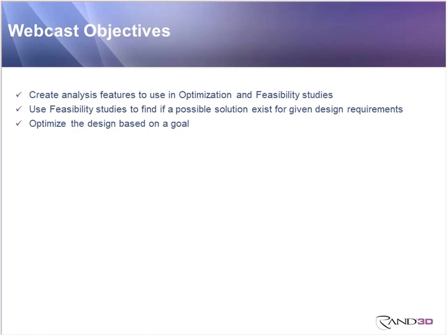The feasibility study is basically going to ask Creo if it's possible to do something. Maybe you want the model to have a volume of 100. You set your design requirement, give Creo variables that can change like dimensions, give it ranges for those values, and Creo will look through those ranges to see if it's possible to achieve that volume of 100. It comes back and says yes or no.